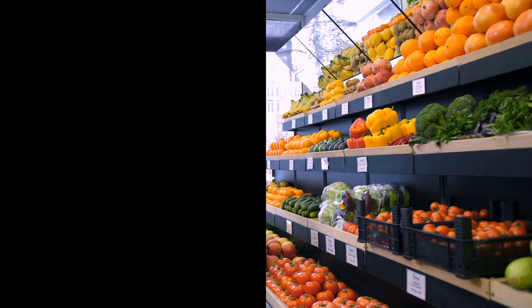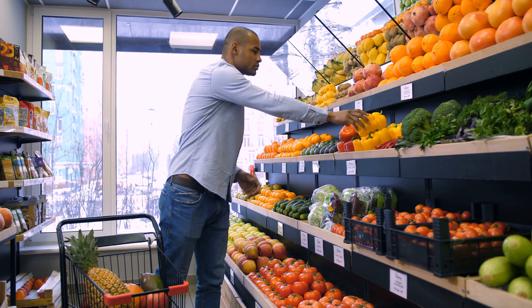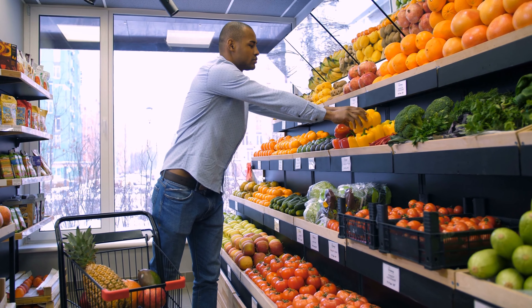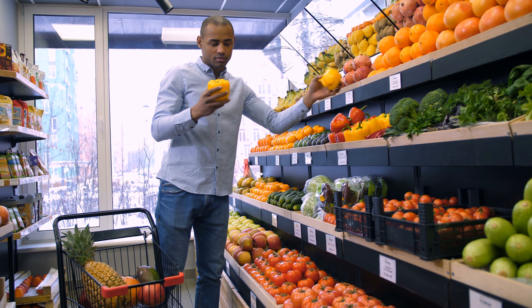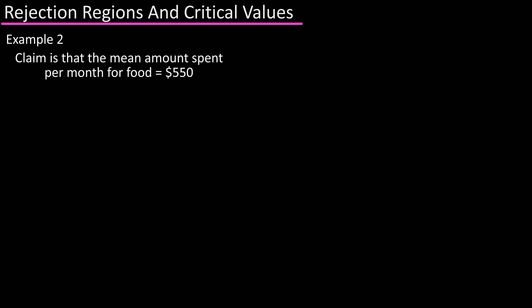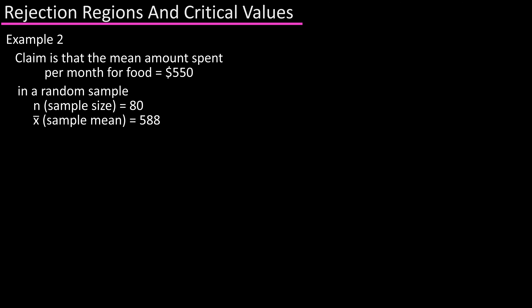One more example: a researcher claims the mean amount of money spent on food per household is $550 per month. In a random sample of 80 households, the mean amount spent on food per household was $588 per month. Assume a standard deviation of 130 and a level of significance alpha equals 0.10. Test the claim.